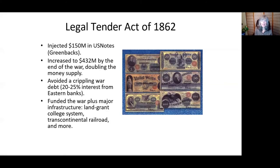When Lincoln came into office, he was immediately faced with a civil war and no way to fund it. If he borrowed from the banks, the eastern bankers were going to charge 20% to 25% interest, which would have left the government with a crippling debt. So instead, he did what the American colonists did — issue paper money backed by nothing but the full faith and credit of the United States. These were U.S. notes, or greenbacks.